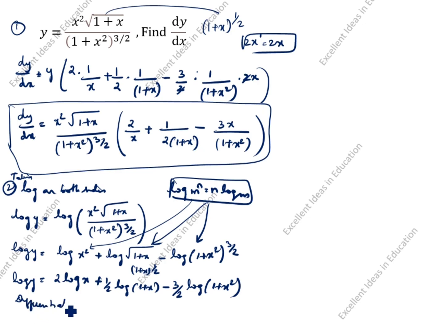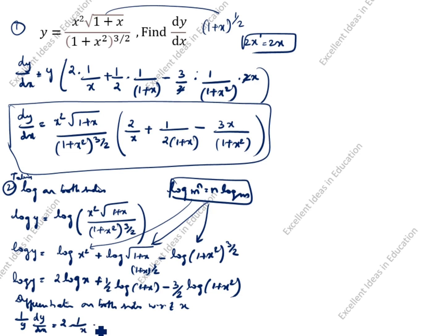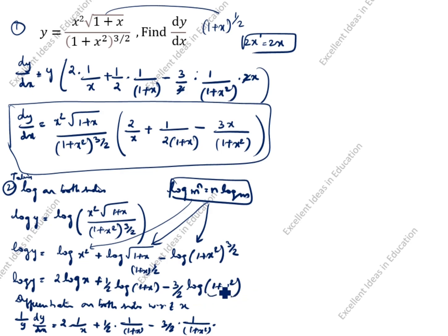Now we differentiate both sides with respect to x. Differentiating the left side gives 1 by y times dy by dx. For 2 log x, differentiation gives 2 times 1 by x. For 1 by 2 log (1 plus x), we get 1 by 2 into 1 by (1 plus x). For minus 3 by 2 log (1 plus x squared), we differentiate using the chain rule: first differentiate log(1 plus x squared), then differentiate (1 plus x squared).